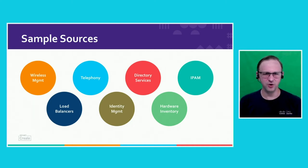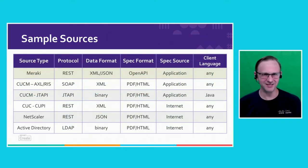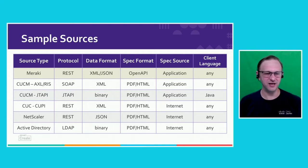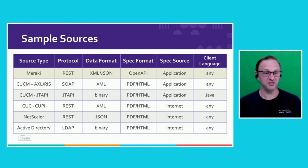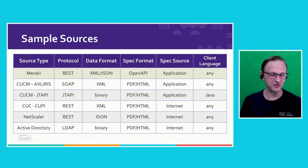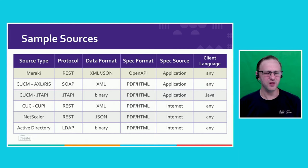Let's take a look at not just the protocols that are going to be used to access these things, but you also have to take into account how you get the data — the API spec. For instance, Meraki: we're using REST, it's nice and easy, it's wonderful to use, it uses the OpenAPI specification. For Call Manager, it's a little bit older and so we're using SOAP. We get the documentation in PDF or HTML. And some of these things, in the case of Call Manager JTAPI, have language-specific requirements — you have to use Java.